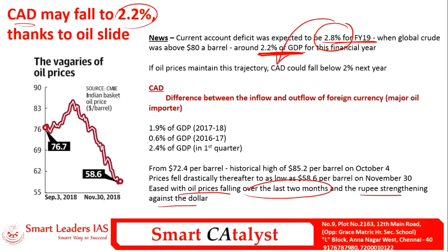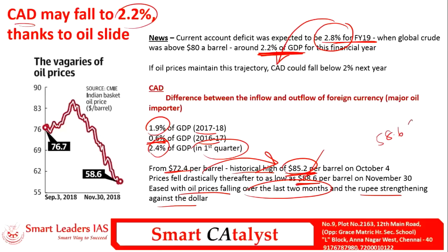If you see the trend of the CAD, it was 0.6 percent in 2016, increased to 1.9 percent in 2017, and again increased to 2.4 percent in the first quarter of this year mainly because of the historical high of 85 dollars per barrel. Before it was nearly 72 dollars per barrel, but it jumped to that very high value. During the last two months it reduced to 58.6 dollars per barrel, so because of this low they revised it to 2.2 percent.